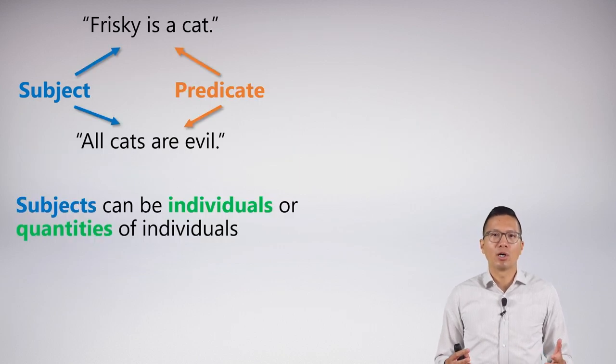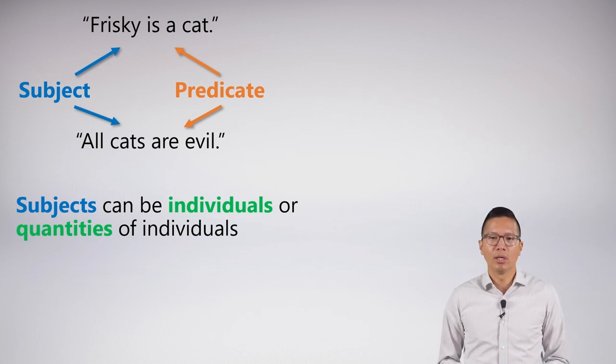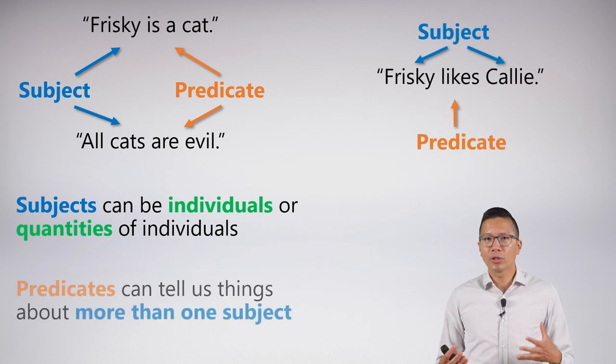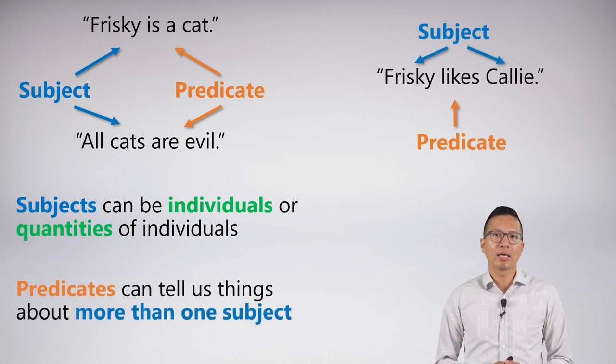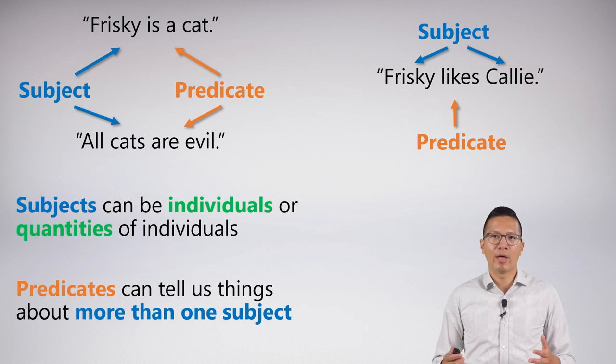Now, subjects are reasonably straightforward. They can be individuals or they can be quantities of individuals. So in this case, instead of just a single individual Frisky, we can talk about all cats. And predicates can bestow properties on either of these things. But predicates can also be a bit more complex. They can relate or tell us relationships or properties about more than one subject. And that's a bit more complicated in logical practice. But it's very common in the way we speak and understand natural language.